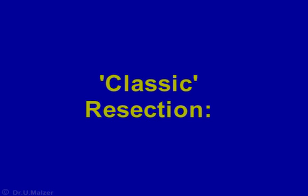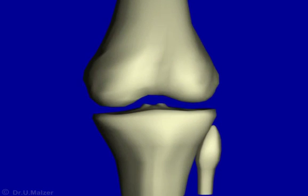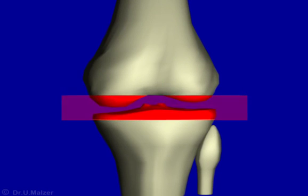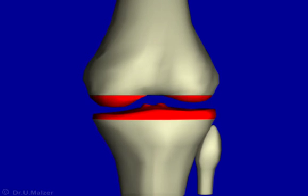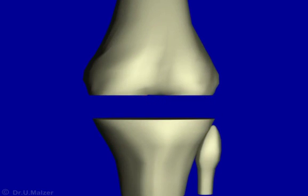Most modern instruments, however, are designed for what is known as classic or standard resection, rather than for anatomical resection. Here, the bone cuts are at right angles to the mechanical axis of the lower limb, resulting in asymmetrical resection of the tibia and the femur. However, in extension, the different resection heights will even out and the gap will be rectangular.